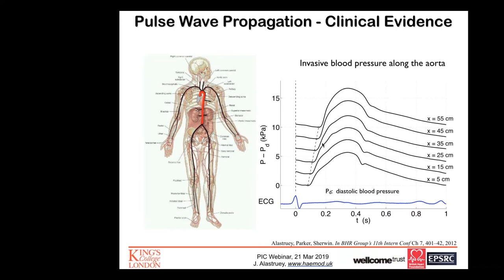These features arise either from the heart to the periphery — an example being the increase in pressure at the start of cardiac contraction — or in the opposite direction, due to early reflections that come back from the periphery back to the heart, an example being the shoulder of these pressure signals.